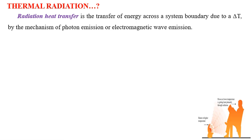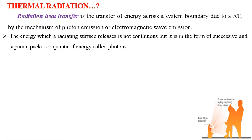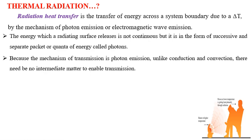For example, when a person is sitting in front of a heater or fire, they get most of the energy by radiation. It is also interesting that radiation heat transfer can occur between two bodies separated by a medium that is colder than both bodies. For example, the energy emitted by the sun reaches the earth after traveling through space and extremely cold air layers at high altitudes. The energy which a radiating surface releases is not continuous but is in the form of successive, separate packets or quanta called photons.